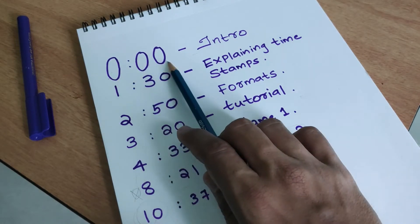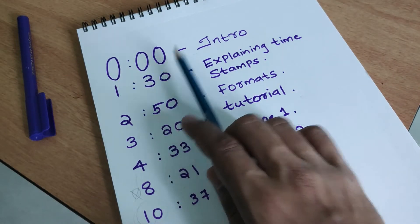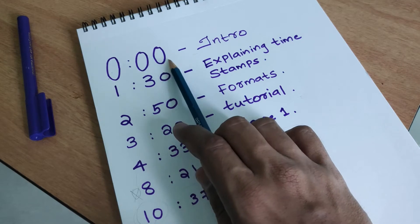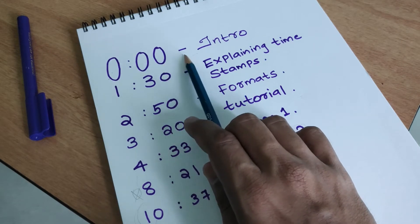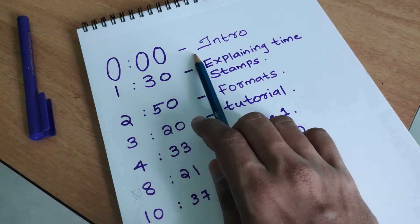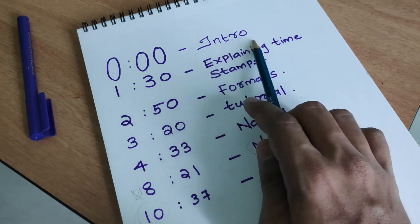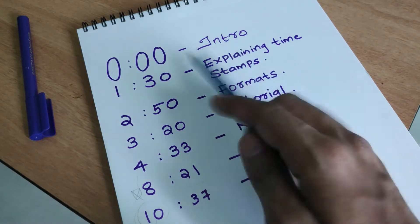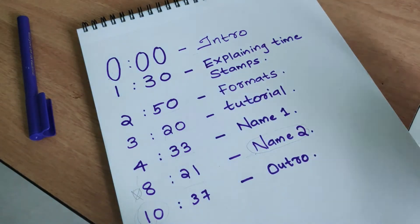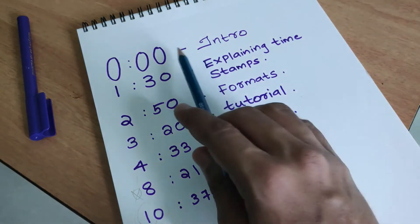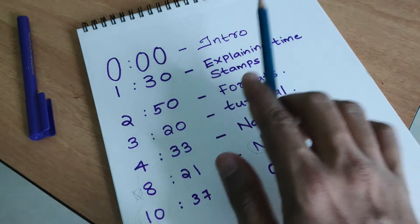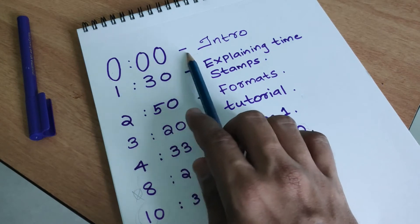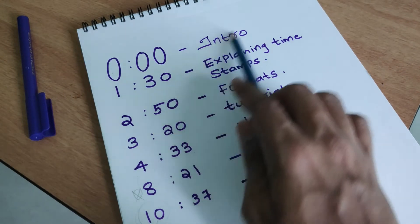This feature is important. The format is: zero, zero, zero — a space, a hyphen, a space, a name. The format is: time, space, hyphen, space, name.